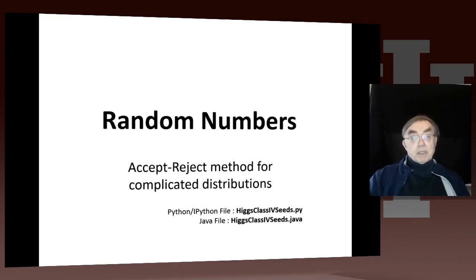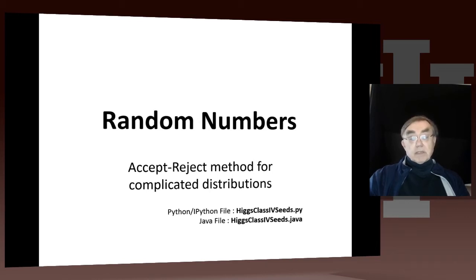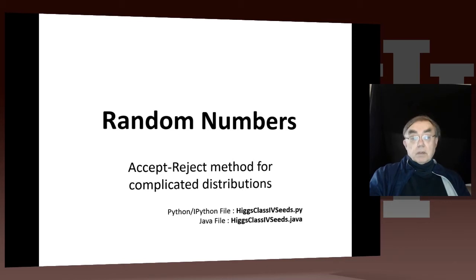Now we come to the accept-reject method in this lesson. We've actually already secretly used that in generating the sloping distribution. It's a very, very important method — in fact, the only method I know for doing complicated distributions.